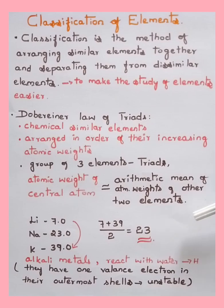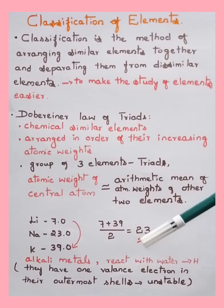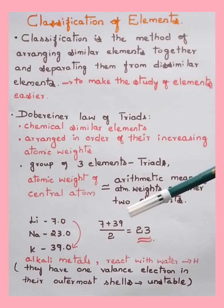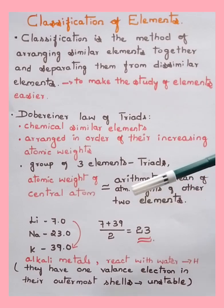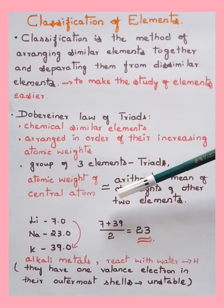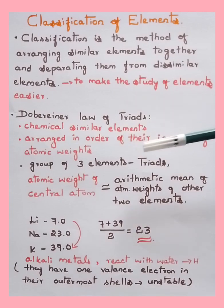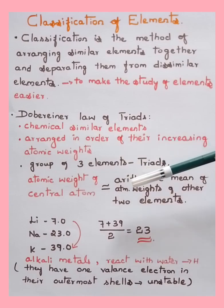These elements are alkali metals — they react with water, give out hydrogen, have one valence electron in the outermost shell, and are unstable. Dobereiner's law was rejected because only few elements could be classified this way, and certain triads had elements with similar properties but nearly identical atomic masses, like iron, cobalt, and nickel (approximately 56, 58, 58), making them difficult to explain.